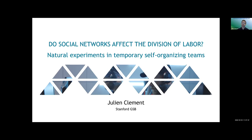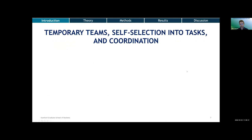I'll try to go relatively fast over the front end so we have enough time to talk about the natural experiment itself. As you can see from the title, I'm interested in how social networks affect the division of labor. Specifically, in a temporary team where people are allowed to self-select into the tasks they're going to work on, are two people more likely to select tasks that are interdependent if they know each other from having collaborated before? That's what we'll be investigating.